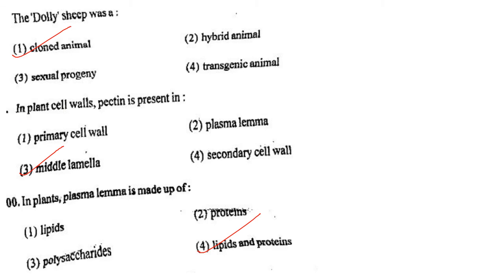Next one: The Dolly sheep was a option 1, cloned animal; option 2, hybrid animal; option 3, sexual progeny; option 4, transgenic animal. Answer is option 1: cloned animal.